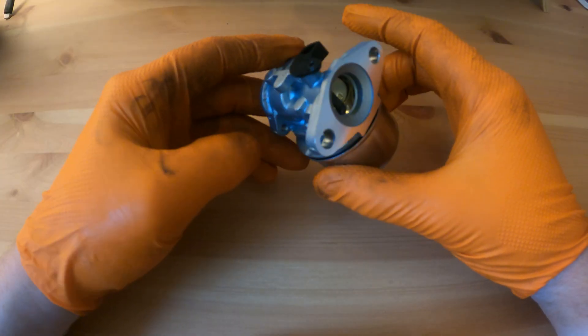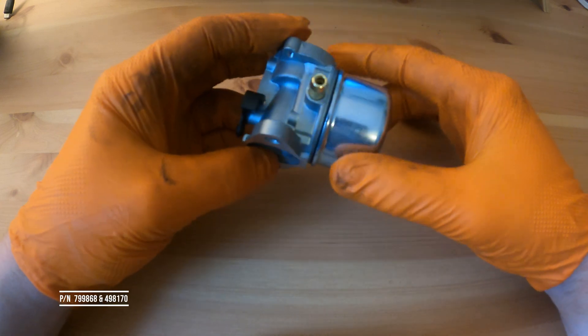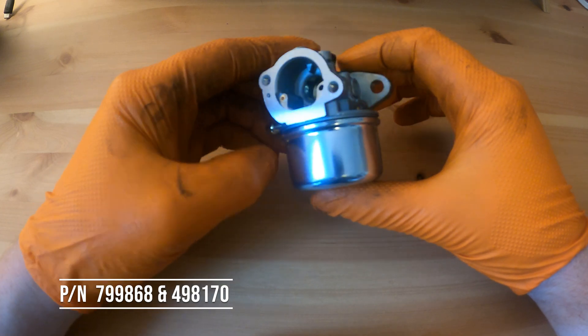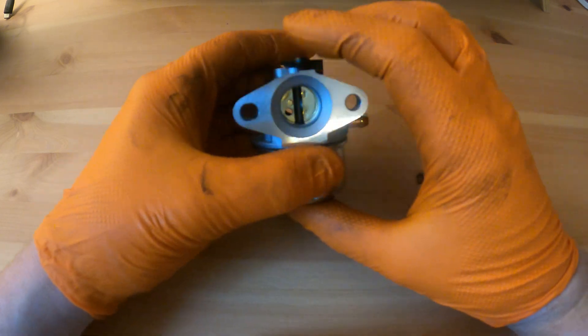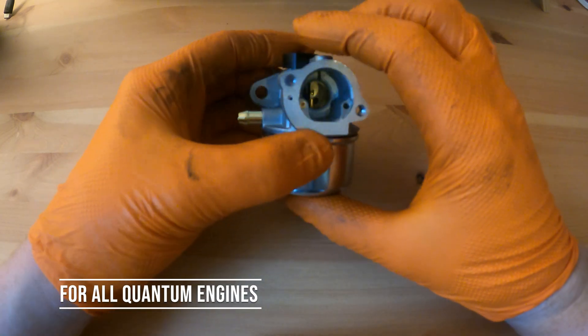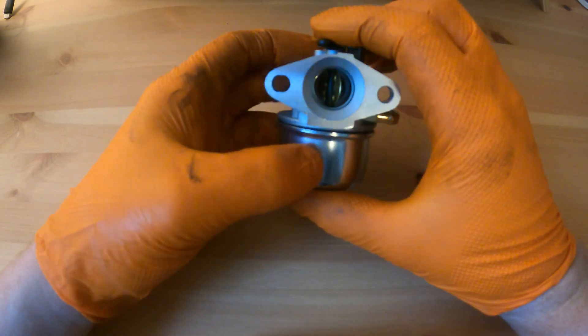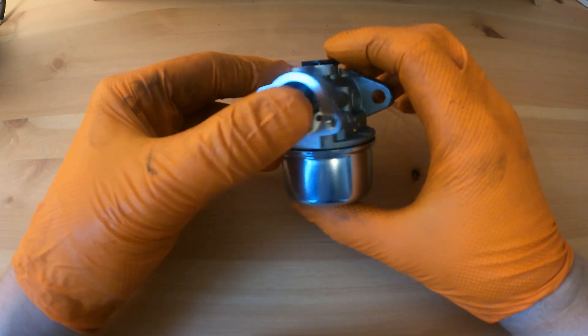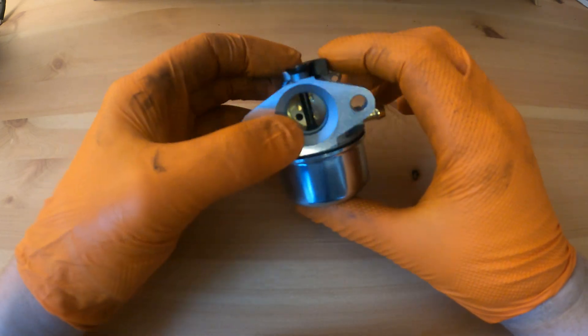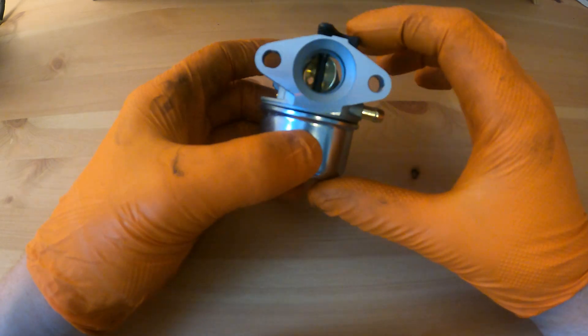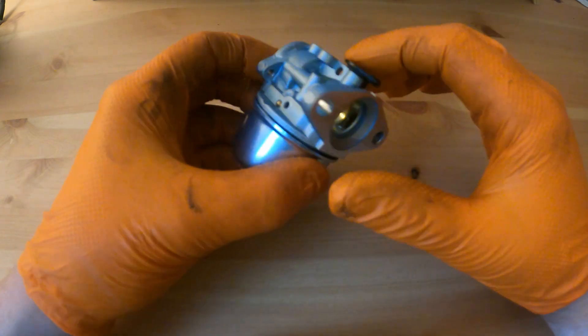This is a Briggs & Stratton quantum carburetor, part number 799868 and 498170. This fits all quantum engines without a choke and the throttle prime is the push button prime. In this video we're going to go through how to dismantle, clean and reassemble this carburetor. This is a very simple carburetor, it has just one throttle plate, no choke, and one main fixed jet in the center of the venturi.